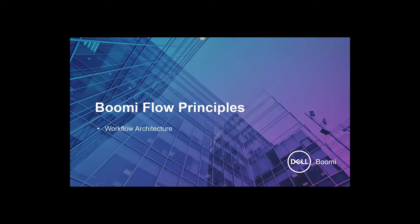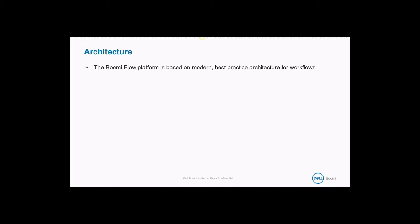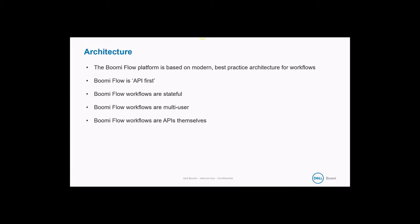Now let's talk about some of the principles of Boomi Flow: the workflow architecture, the Boomi Flow core, and the Boomi Flow frameworks. Boomi Flow platform is based on modern best practice architecture for workflows. Boomi Flow is API first, allowing you to extend the software you have, integrate and connect different pieces of software, and write new applications using existing technology and data. Boomi Flow workflows are stateful, multi-user, and APIs themselves. Boomi Flow handles asynchronous and synchronous messaging, workflows can run as background tasks, and Boomi Flow can be externally triggered. It also allows the ability to execute subflows and uses a Swimlane architecture to allow workflows to pass control between users with different credentials.